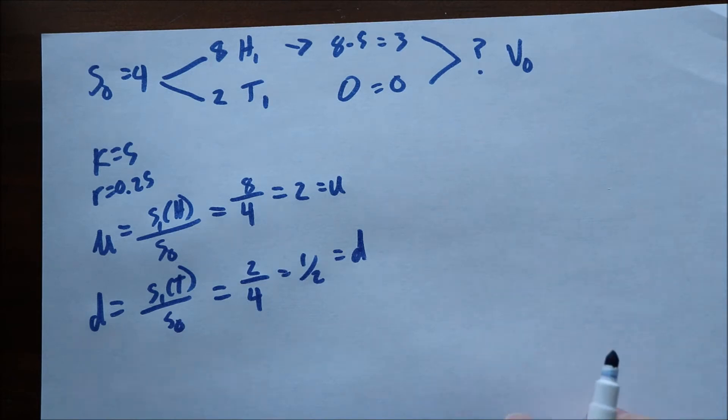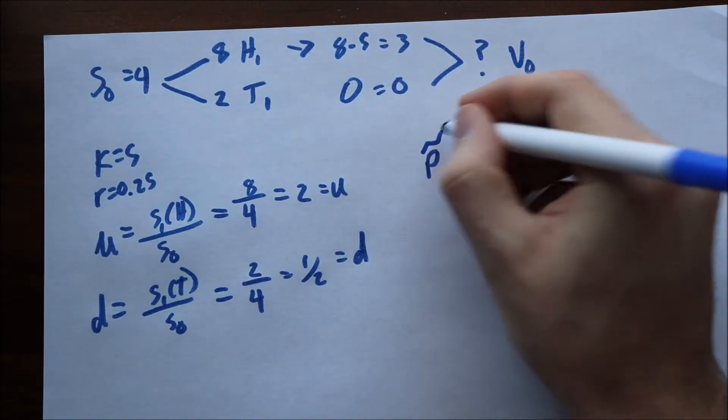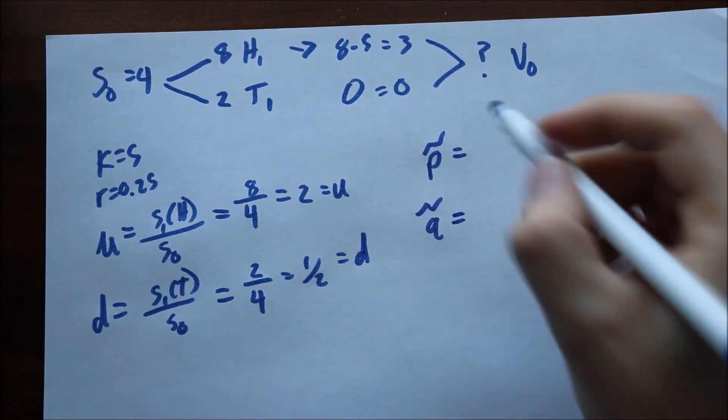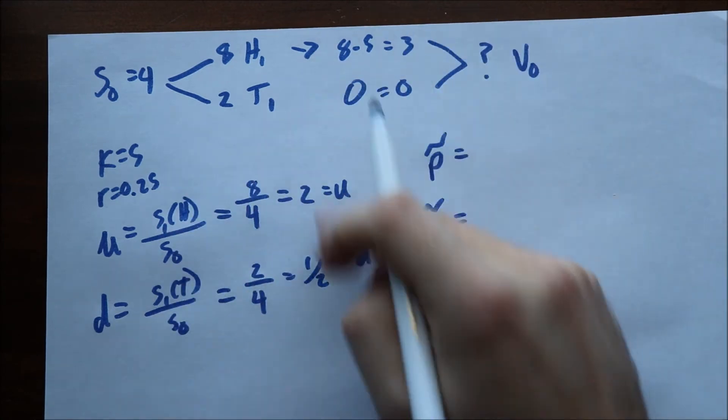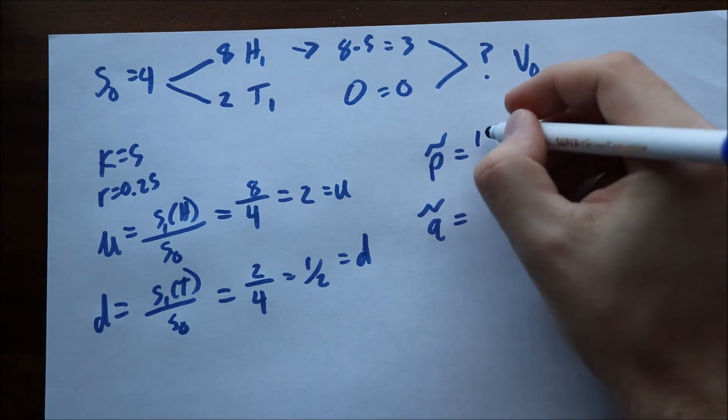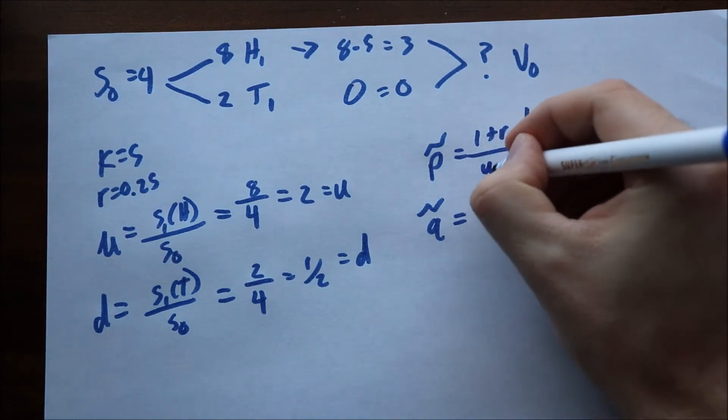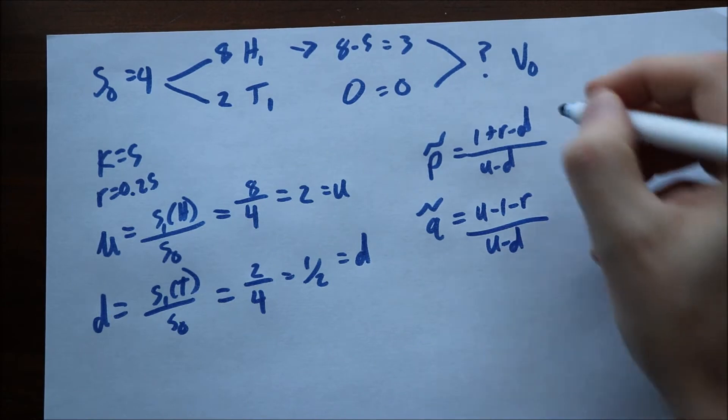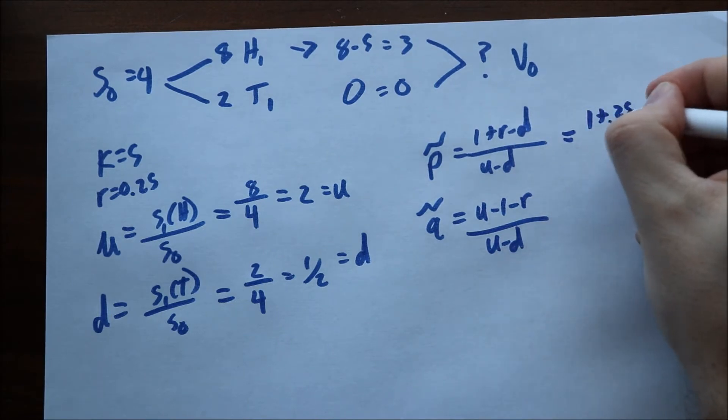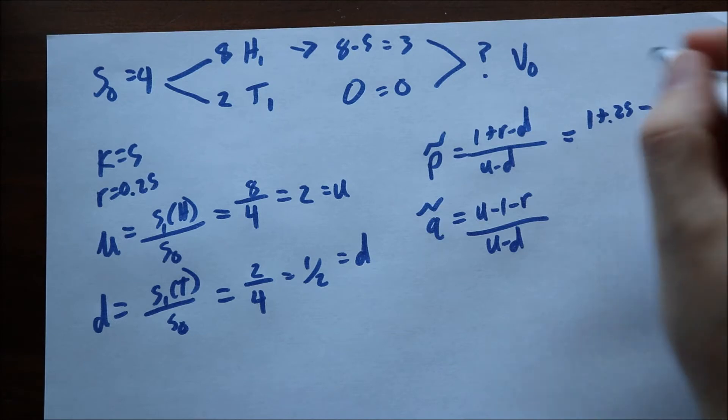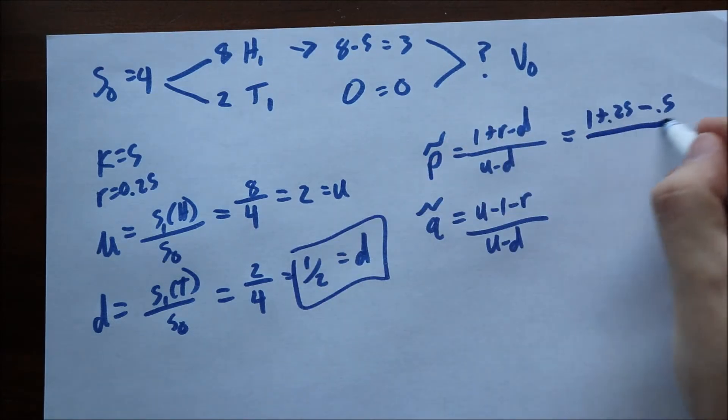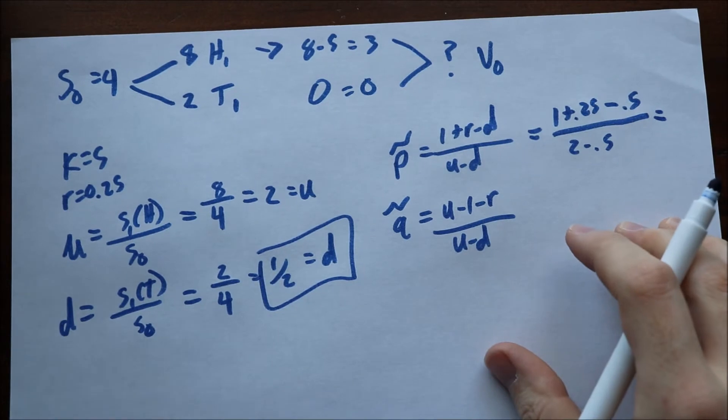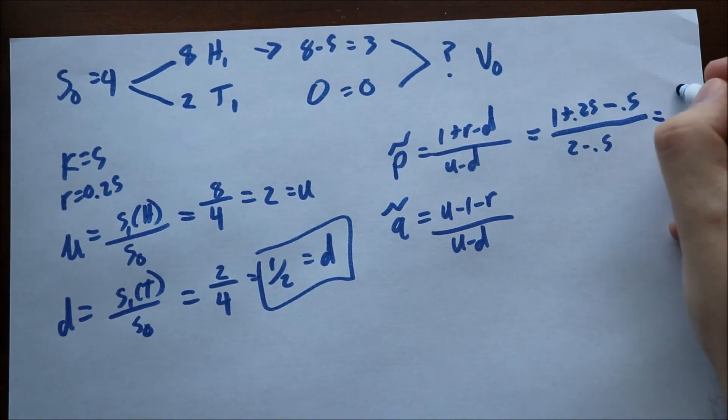So now we would like to solve for our P's and our Q's. We're going to call this P tilde, and we're going to call this Q tilde. These are risk-free probabilities. U and D are just these fractions, which we'll use to calculate the risk-free probabilities. P is 1 plus R minus D divided by U minus D. This is equal to 1 plus 0.25 minus D, which is 0.5, which we got from here. And then you divide that by U minus D, which is 2 minus 0.5. And this will come out to be 1 half.